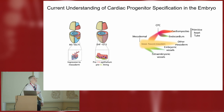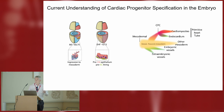Basically, you specify this cardiac progenitor cell that then diversifies into cardiomyocytes and endocardium and forms the primitive heart tube. Later on, there are other progenitors that generate the second heart field and remain multipotent for a while.